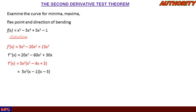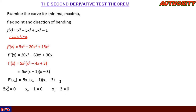Setting f'(x₀) = 5x₀²(x₀ − 1)(x₀ − 3) = 0, we solve for x₀. From 5x₀² = 0, we get x₀ = 0. From x₀ − 1 = 0, we get x₀ = 1. From x₀ − 3 = 0, we get x₀ = 3.